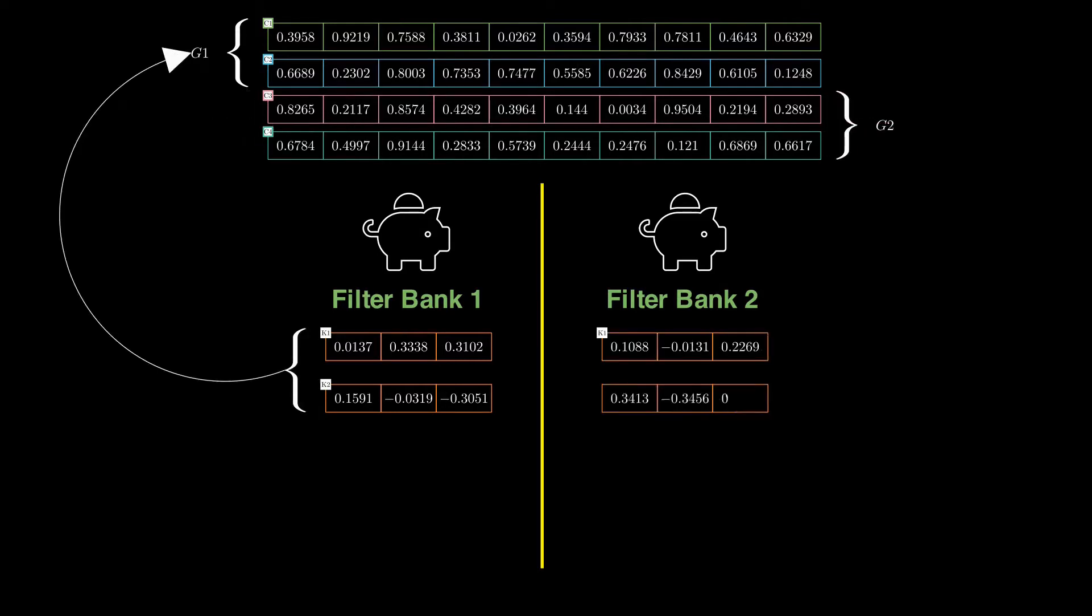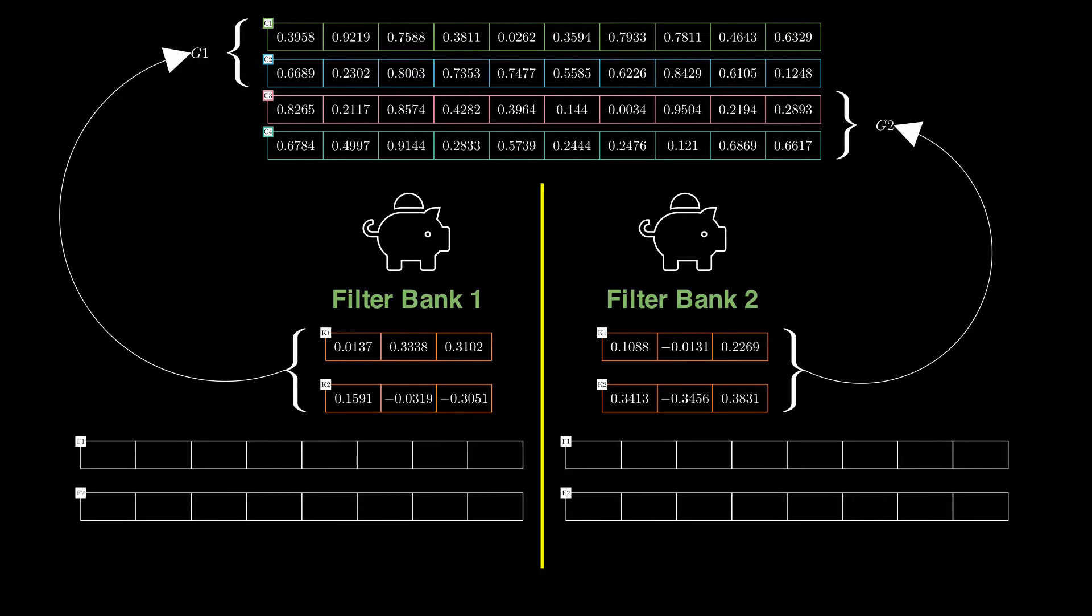And the input channels of group two will have their kernels in the filter bank two. So this time kernel one of filter bank two will be for channel three and kernel two of filter bank two will be for channel four. Since there are two kernels in the filter bank one, there will be two feature maps. The situation is same for filter bank two.